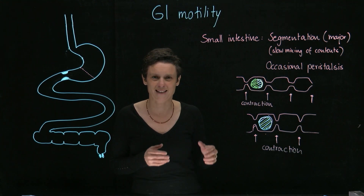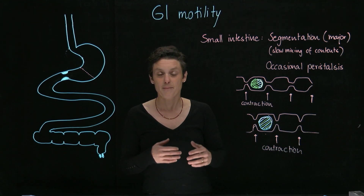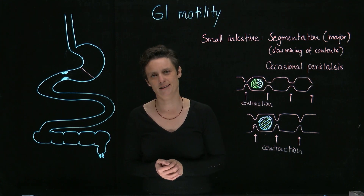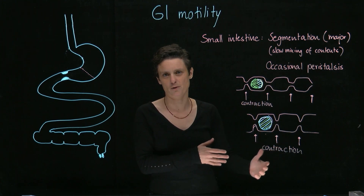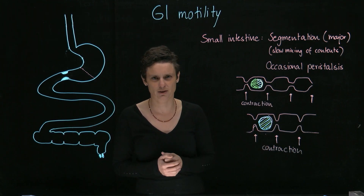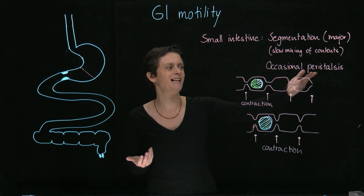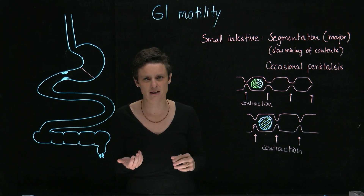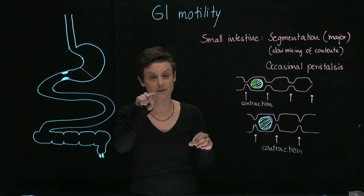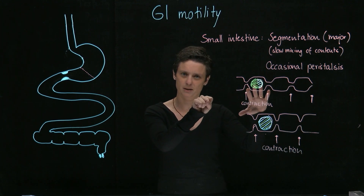But from time to time we need peristalsis in the small intestine — we need to move things forward. Once we've done enough mixing, at some point we want to move things forward into the colon. This is again peristalsis: we're going to contract above the bolus and relax below, contract above and relax below, to propel the contents forward.